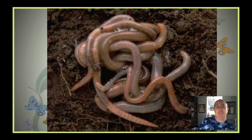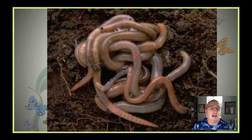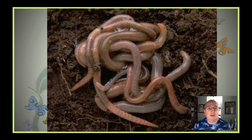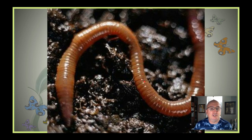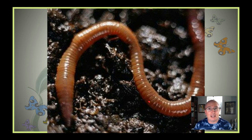Here's some typical earthworms, which we're very familiar with — great for fishing, sometimes called nightcrawlers. There are many different species of earthworms. Here's another one where you can actually see these repeating segments. This is why these worms fall into the group of segmented worms, which is what annelids are.